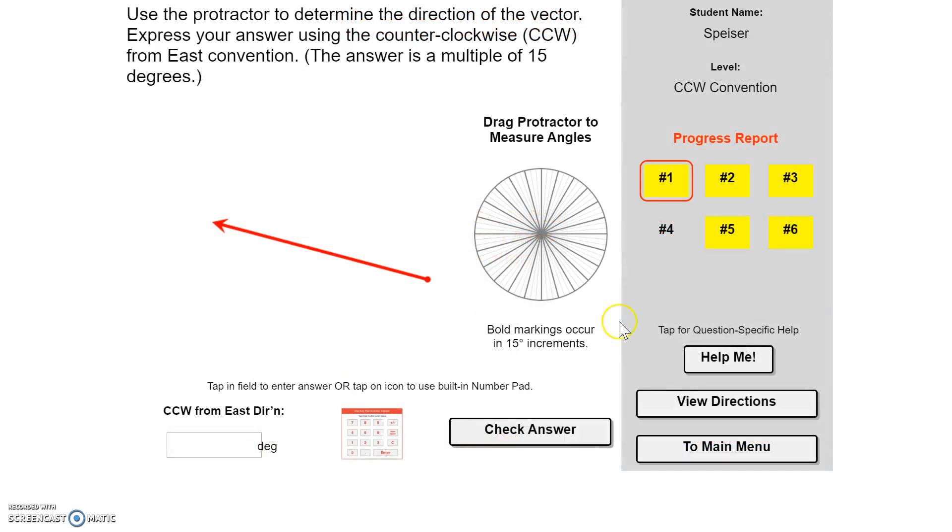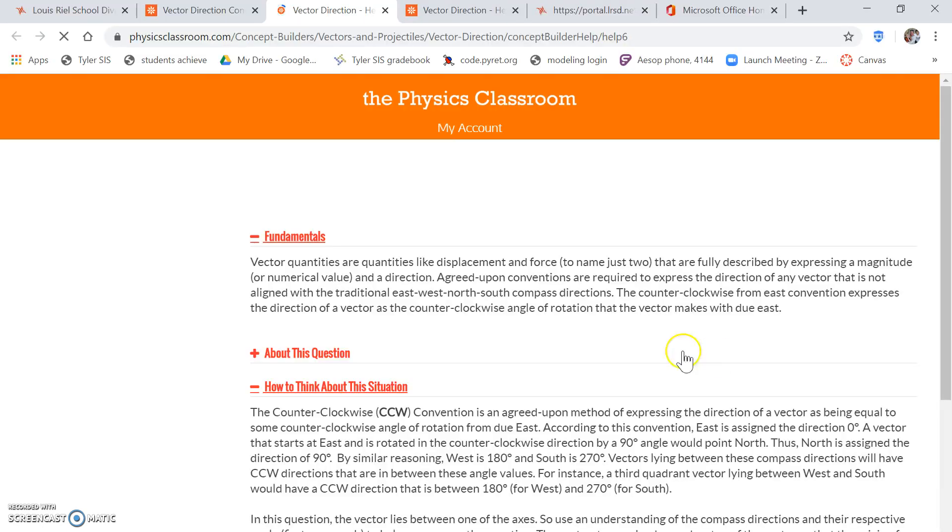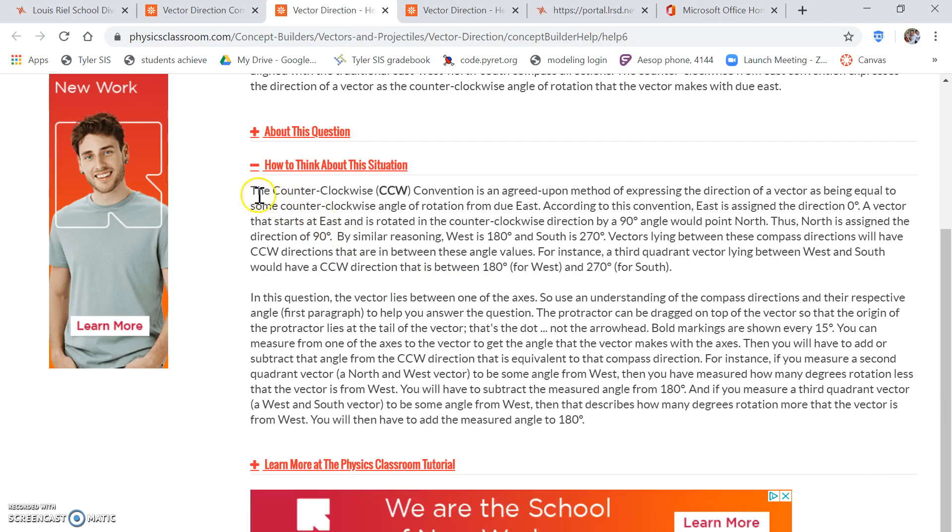So before we start, I just want to mention that there is this help me over here. So if you click on the help me, it will give you some things to read about. Here it says, the counterclockwise convention is an agreed upon method of expressing the direction of a vector.